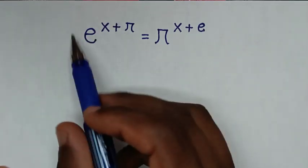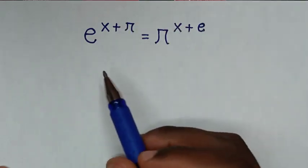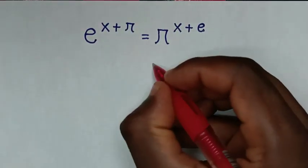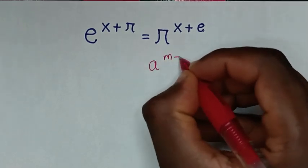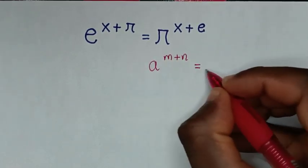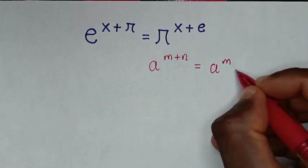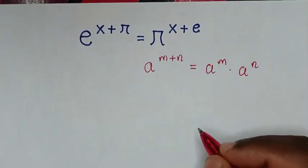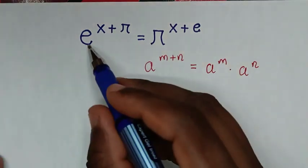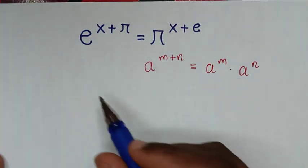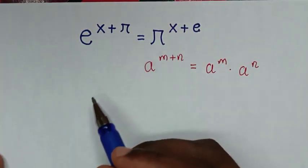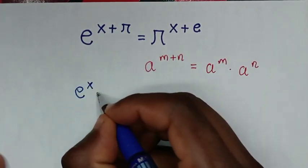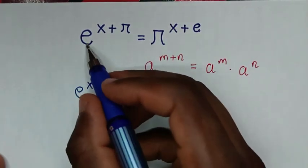Now this part is in the form of a^(m+n) = a^m × a^n. So we'll apply this form. Therefore, e^(x+π) is the same as e^x times e^π.